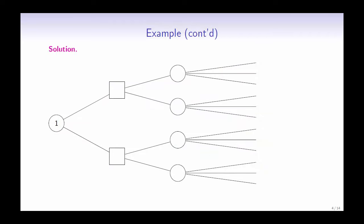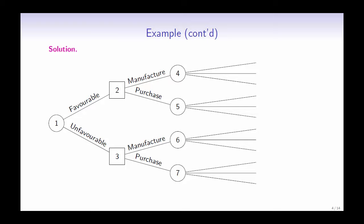First, we start off with an outcome node. We can have either a favorable or unfavorable outcome. After knowing the outcomes, the company can make a decision to either manufacture or purchase the component. If the company decides to manufacture the component, then there are three following outcomes.